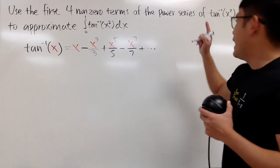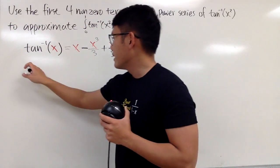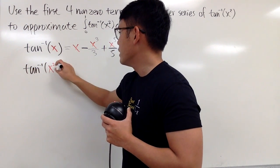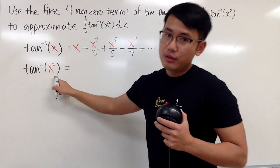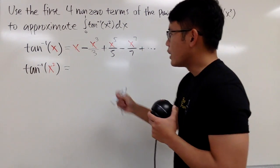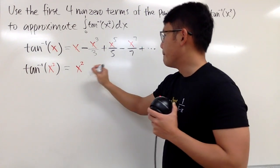Anyway, that input is just x. I want to have x squared, so let's go ahead and write down the inverse tangent of x squared. And of course, we can just simply plug in x squared into all this x right here. So we see that the first term is just going to be x squared and then minus.